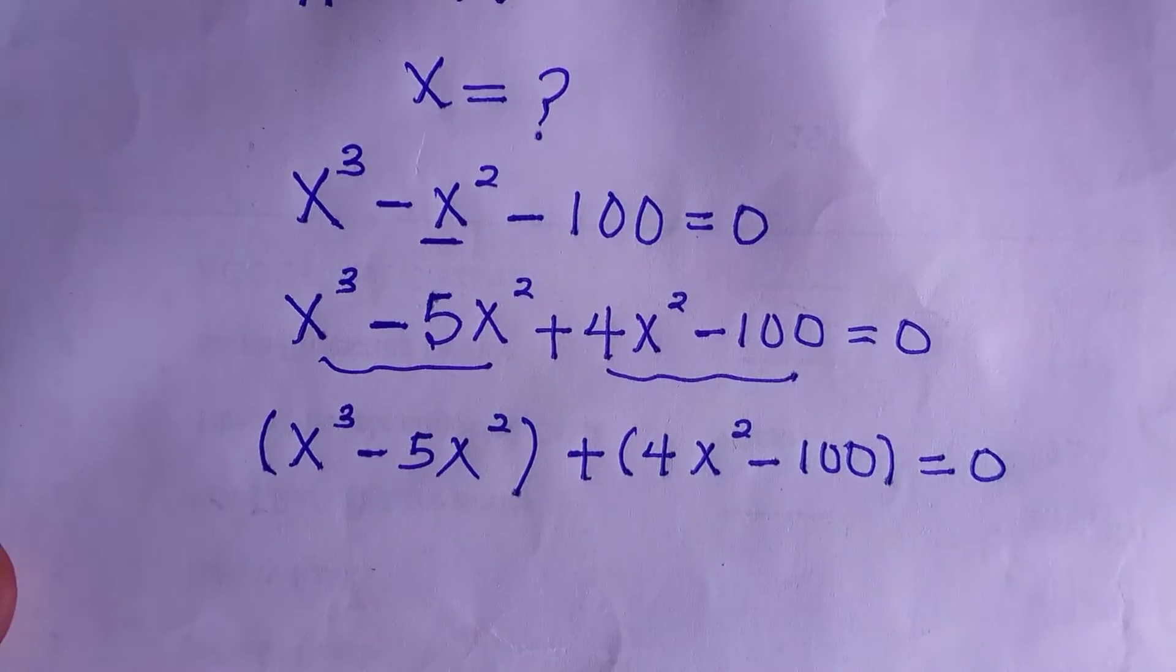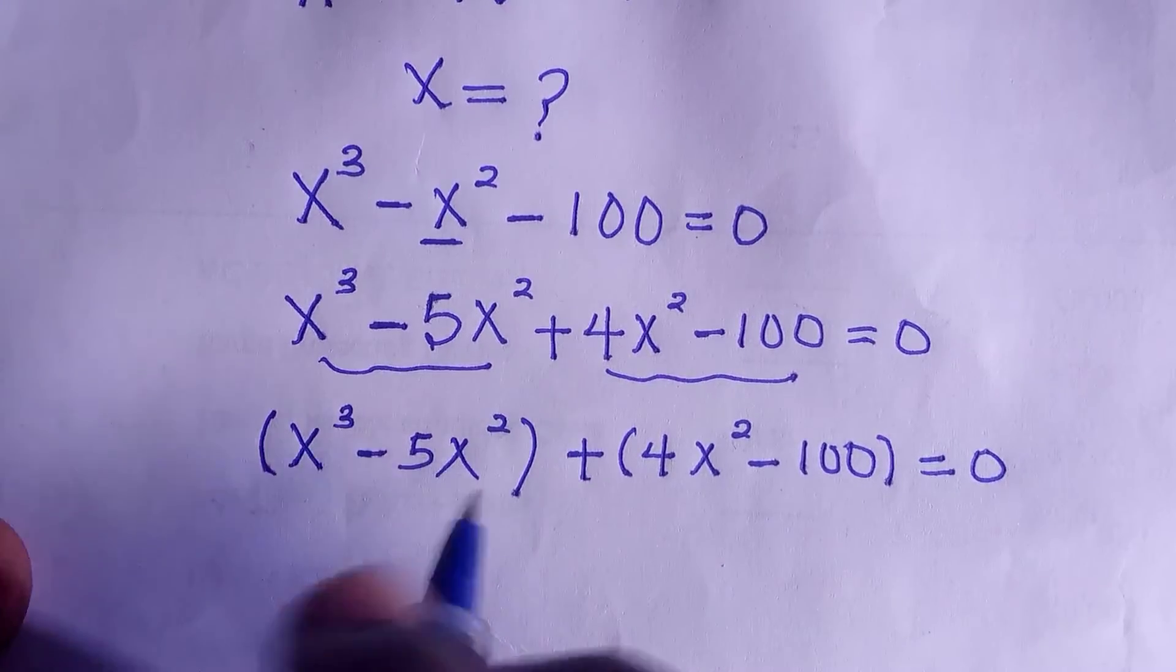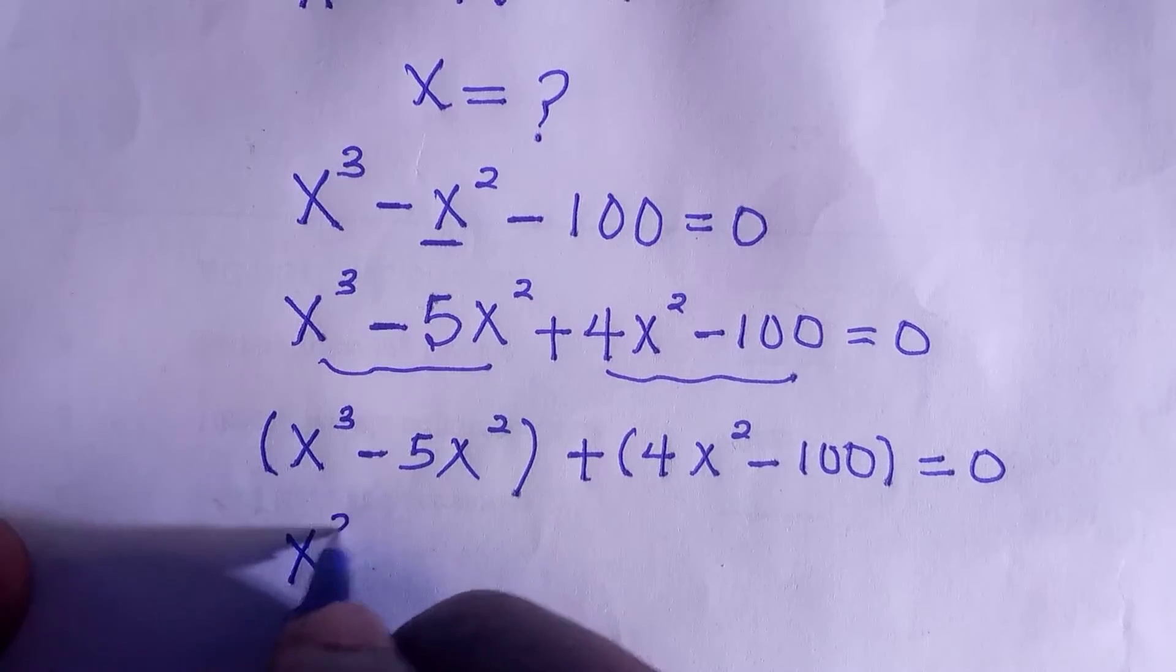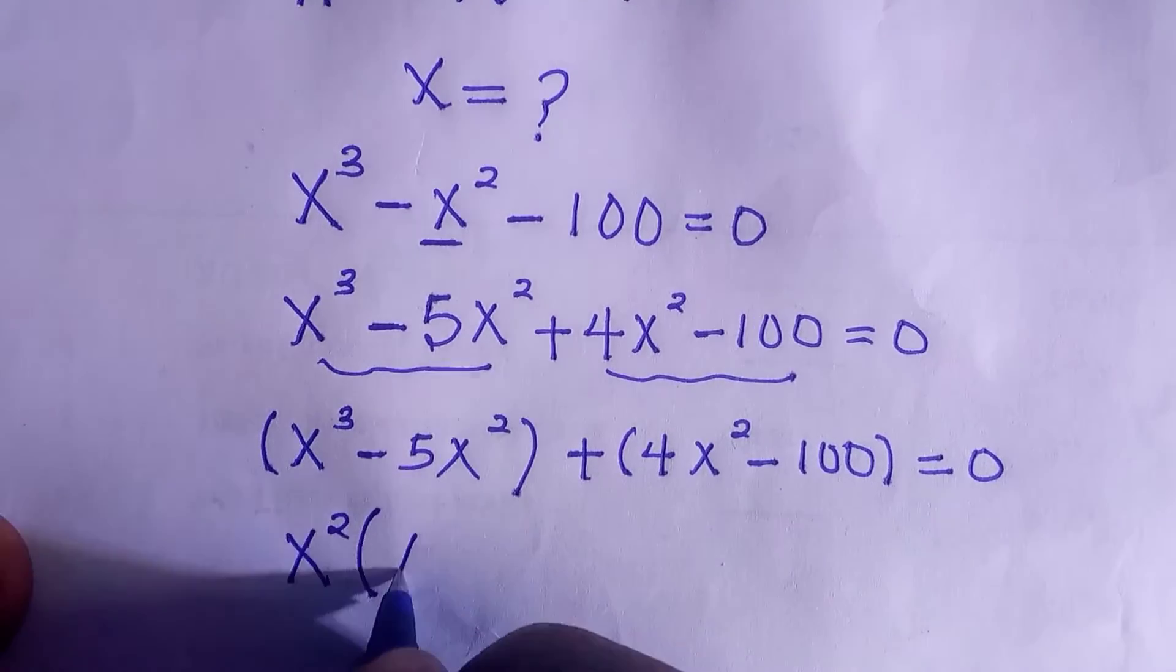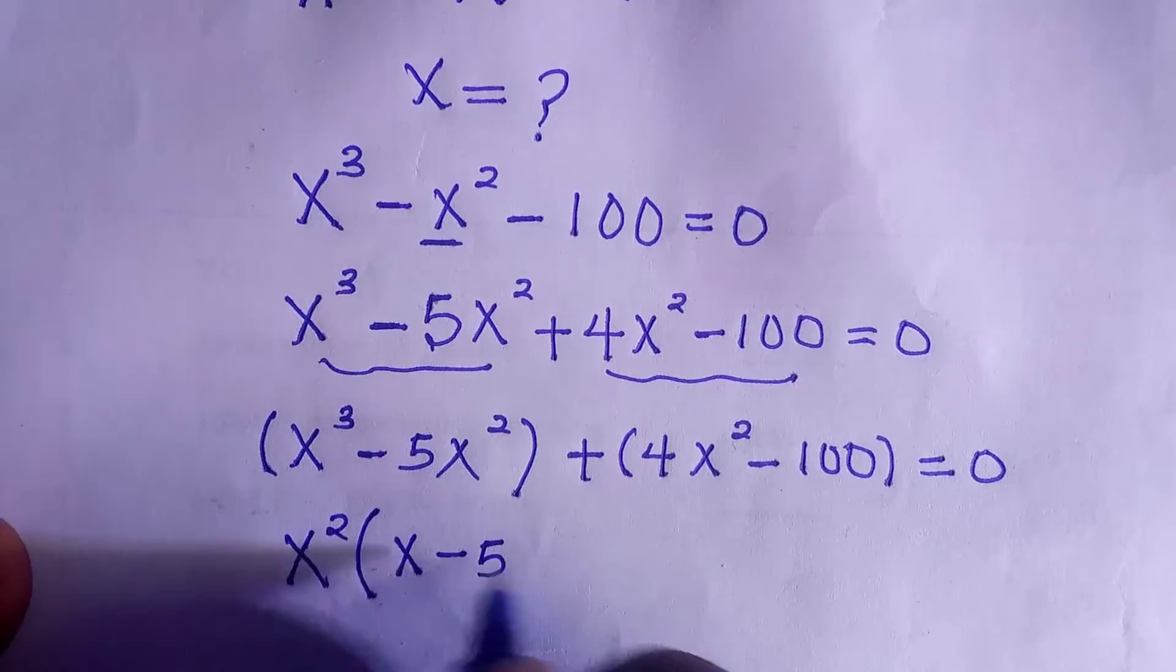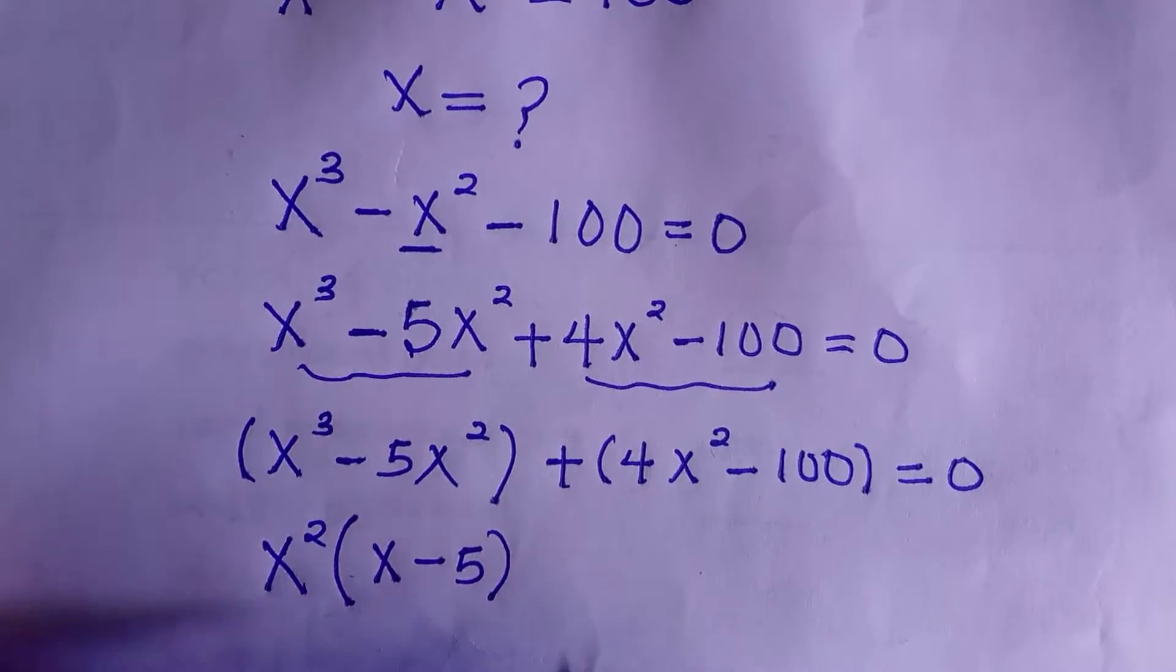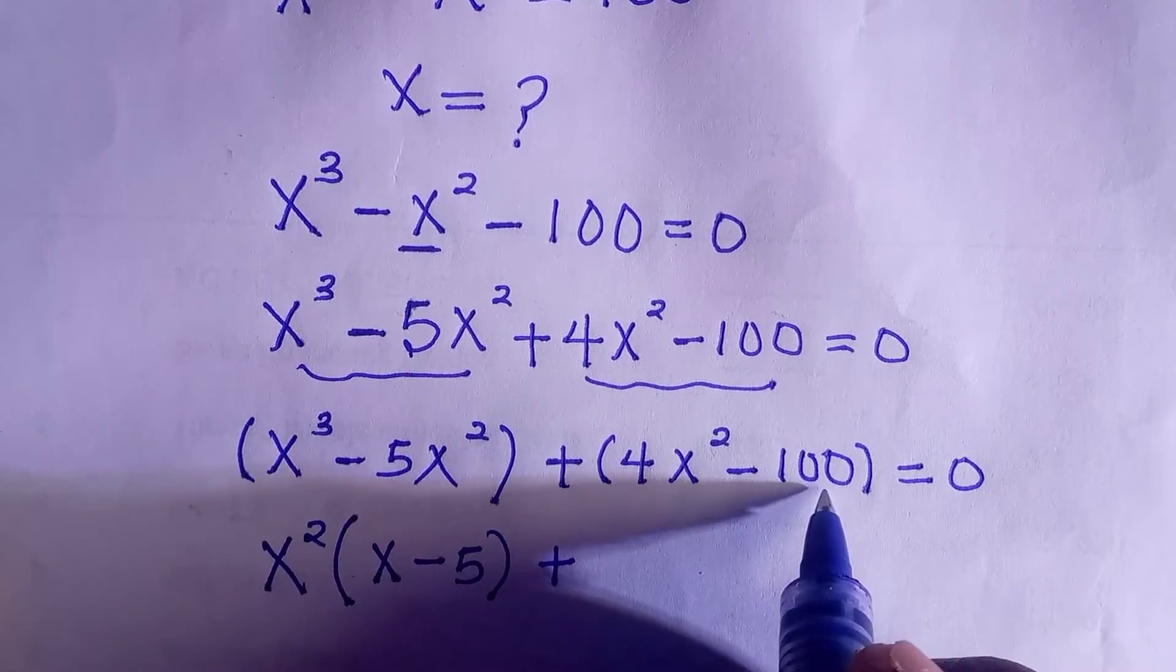So for the first one, x raised to power 2 is common here, and by taking it out we have x minus 5 left. And plus 4 is common here.